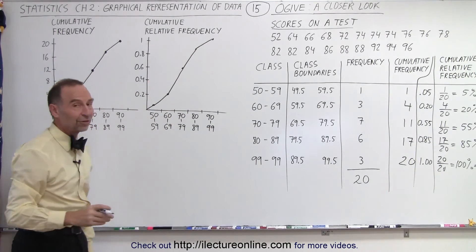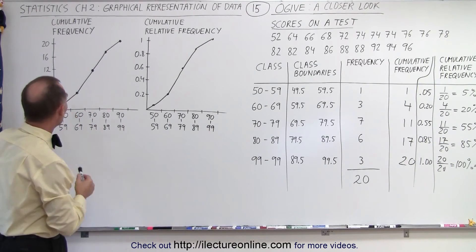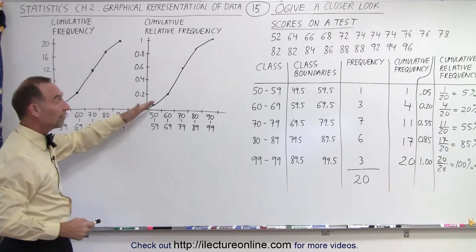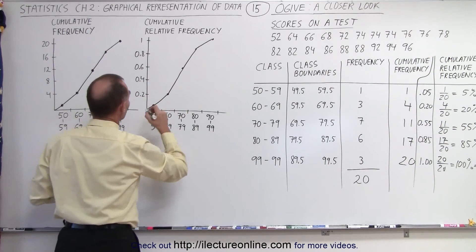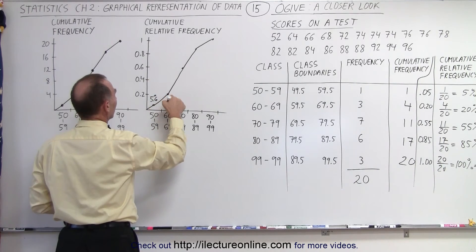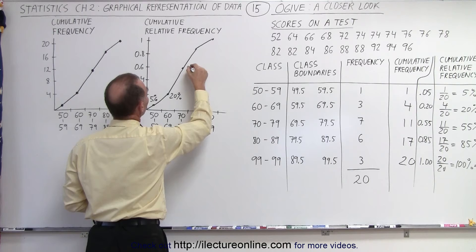Notice that the shape of the two graphs are identical. They better are identical. It's just that the numbers associated with them are different. Now sometimes it helps to write the percentages in there on the graph itself. So this represents 5%. This represents 20%. This represents 55%. And this represents 100%.